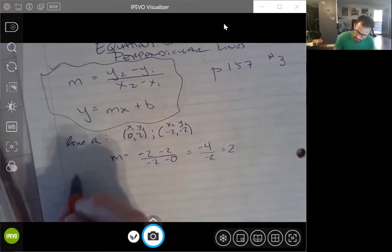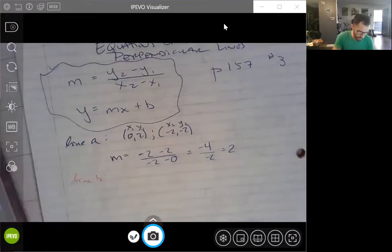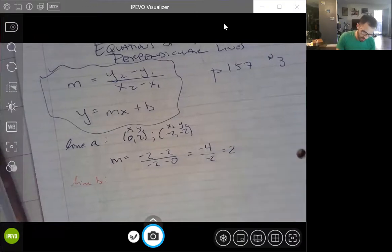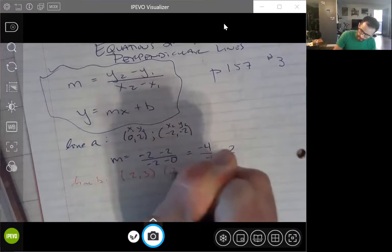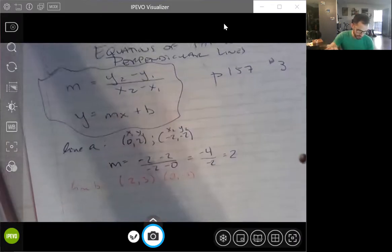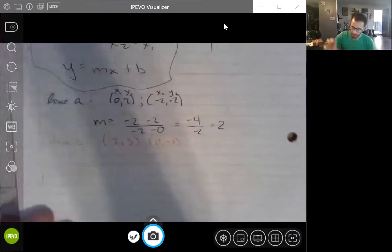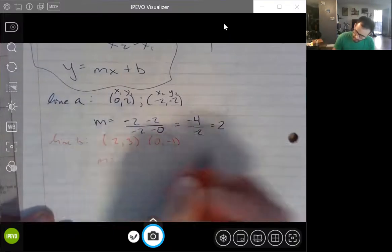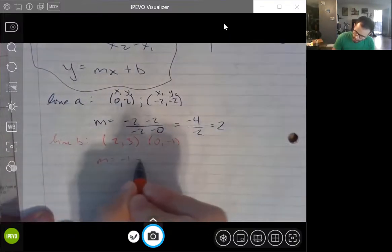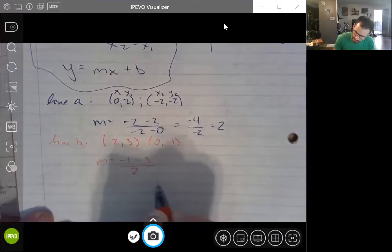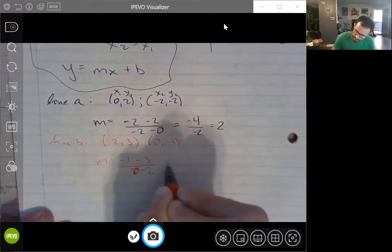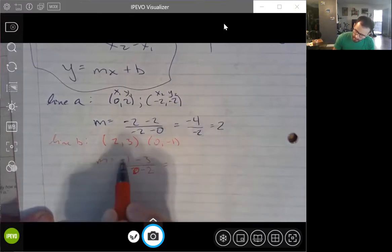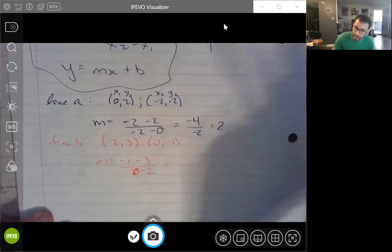On to line B in red. We know that there is a point at (2, 3) and a point at (0, -1). Our slope is going to be y2 minus y1 all over x2, excuse me, x2 minus x1. -1. And you know what, since I made a mistake, let's take this moment, let's check.